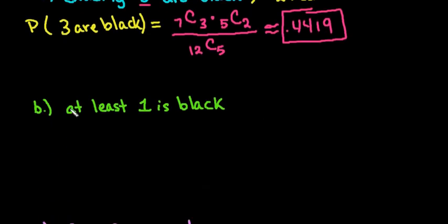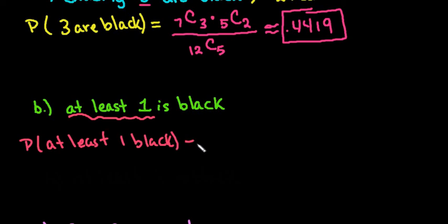For the next one, since it says at least one is black, I'm going to use the complement rule. So the probability of at least one black is equal to 1 minus the probability of 0 black. This makes it easier to do, because at least one means that out of the 5, the other option is I could do this step that I did up here for 1, 2, 3, 4, and all 5 of them being black, or you can use the complement rule where you do 1 minus the probability of 0 of them being black, which is a lot shorter.